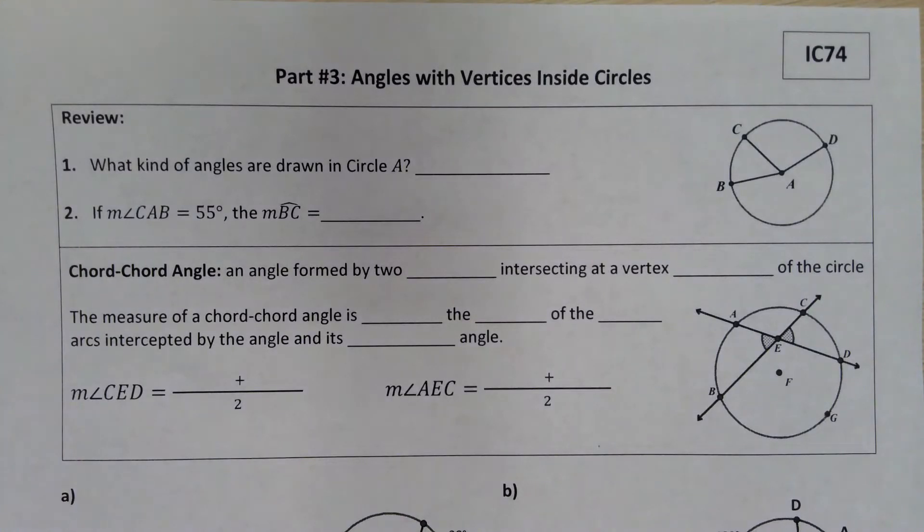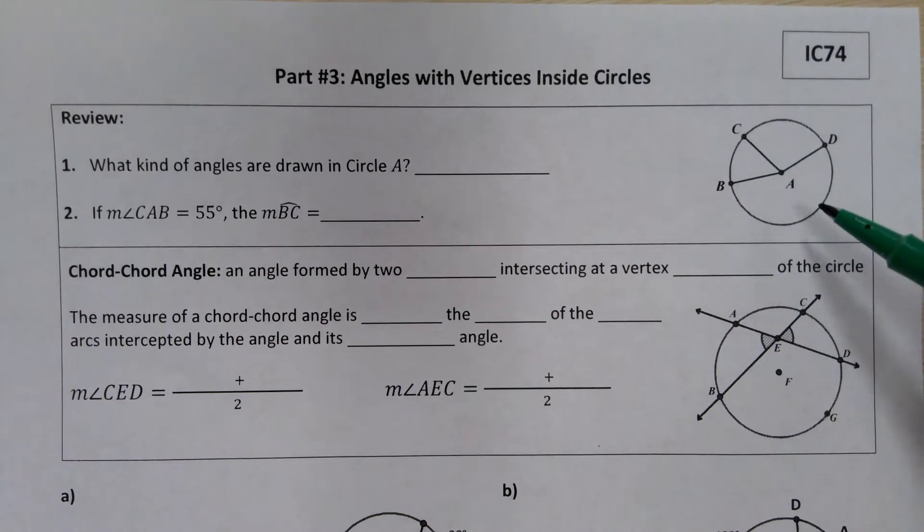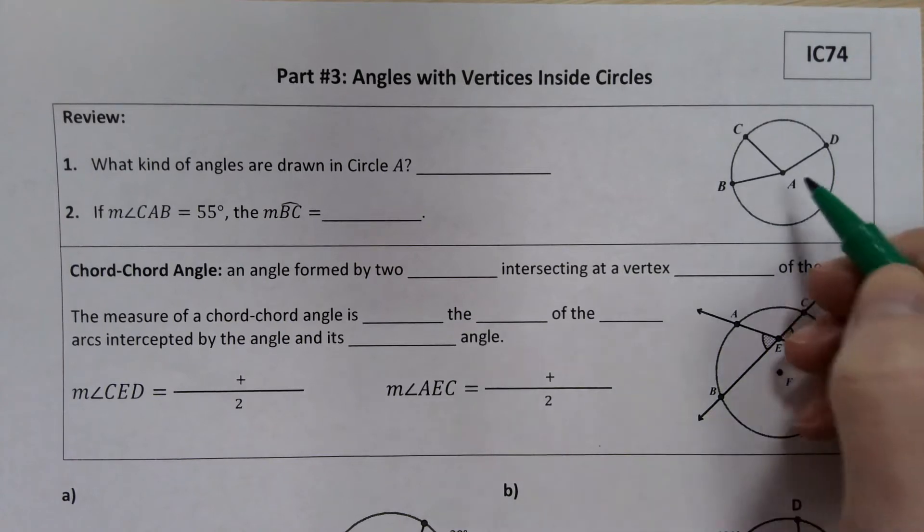So far we've learned about three different types of angles through our first two vocabulary notes videos, and the first kind is actually showing up in this original example here. This is an example of a type of angle that has a vertex inside the circle, but it's at a very specific location.